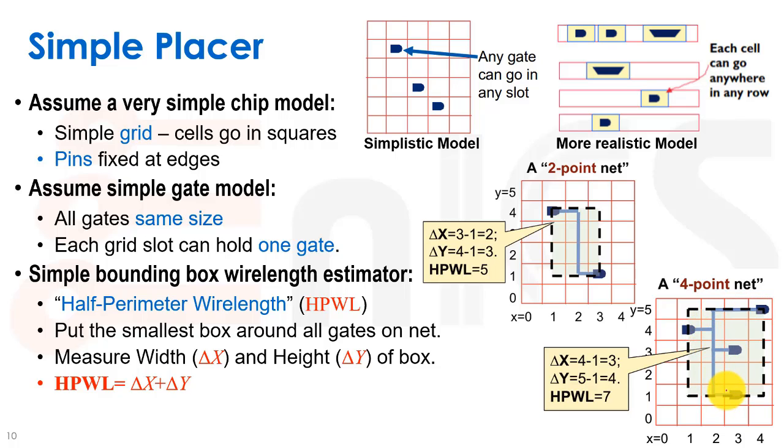Using the half perimeter wire length, we bound all of these cells, and it gives a much more realistic estimation of how much each additional net adds to the wire length, because this cell doesn't add much to our general wire length.